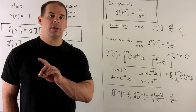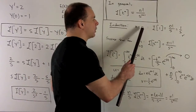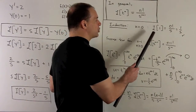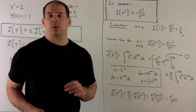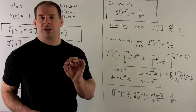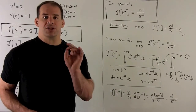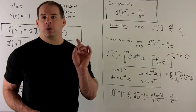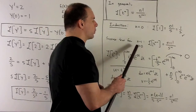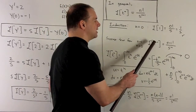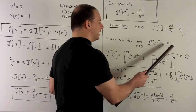In general, let's prove this by induction. For the base case, when n equals 0, the Laplace transform of 1 equals 0 factorial over s, which is 1 over s, and we've verified that using the definition. Now assume the formula is true for n minus 1 where n is positive — that is, the Laplace transform of t to the n minus 1 equals n minus 1 factorial over s to the n.